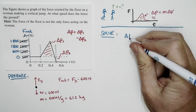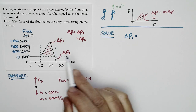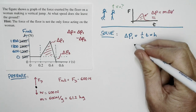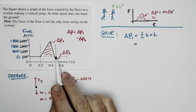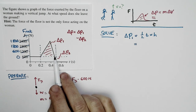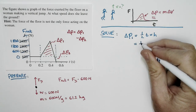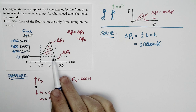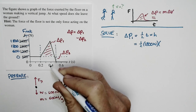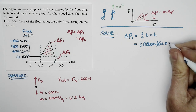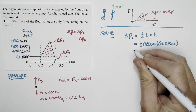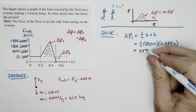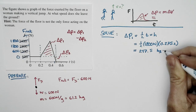We can calculate delta P1 as the area of the first triangle. The height of this triangle is 1800 Newtons. The base runs from 0.2 seconds up to 0.475 seconds, so the time interval is 0.275 seconds. Area equals one half times base times height: one half times 1800 Newtons times 0.275 seconds gives delta P1 equal to 247.5 kilogram meters per second.